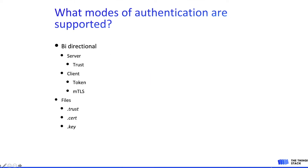The next hot topic in LoRa Basic Station is the modes of authentication. LoRa Basic Station defines bi-directional authentication mechanisms. On the server side this is via trusted certificates. On the client side this is either through an HTTP token or client-side certificate authentication, which is called mutual TLS. There are certain files defined in the specification — the trust file, the cert file, and the key file — and these are the values you fill in to achieve certain modes of authentication, which we will go through now.